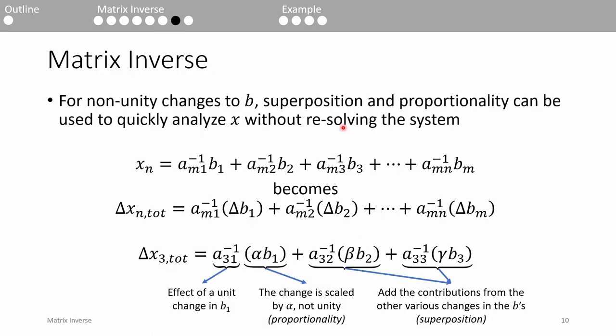We can take this a step further and throw proportionality into the mix. Suppose we want to know how the total response changes if all the elements in the b vector change not just by a unit amount. Proportionality makes this really easy. Instead of having to re-solve the system, we just multiply each b value by the amount it changed and superpose them.